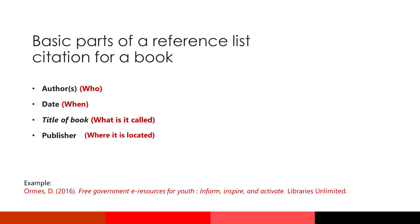Basic reference list entries for books are similar to those for articles. You will start with the author or authors, followed by the date of publication, and then you'll include the title of the book. Since you won't have journal information to include, instead you'll provide the name of the publisher. This is the information about where a book is located. The resulting entry looks like the example here, similar to what you have for an article, but usually a bit shorter.